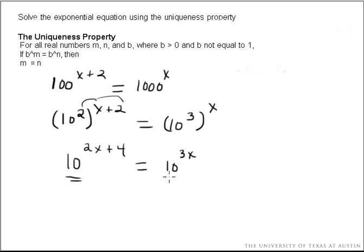Now, my bases are the same. So according to the uniqueness property, my exponents are the same. So I can now set my exponents equal to each other and solve. I'm going to move my 2x to the right, because that keeps everything positive. And I get 4 equals x.